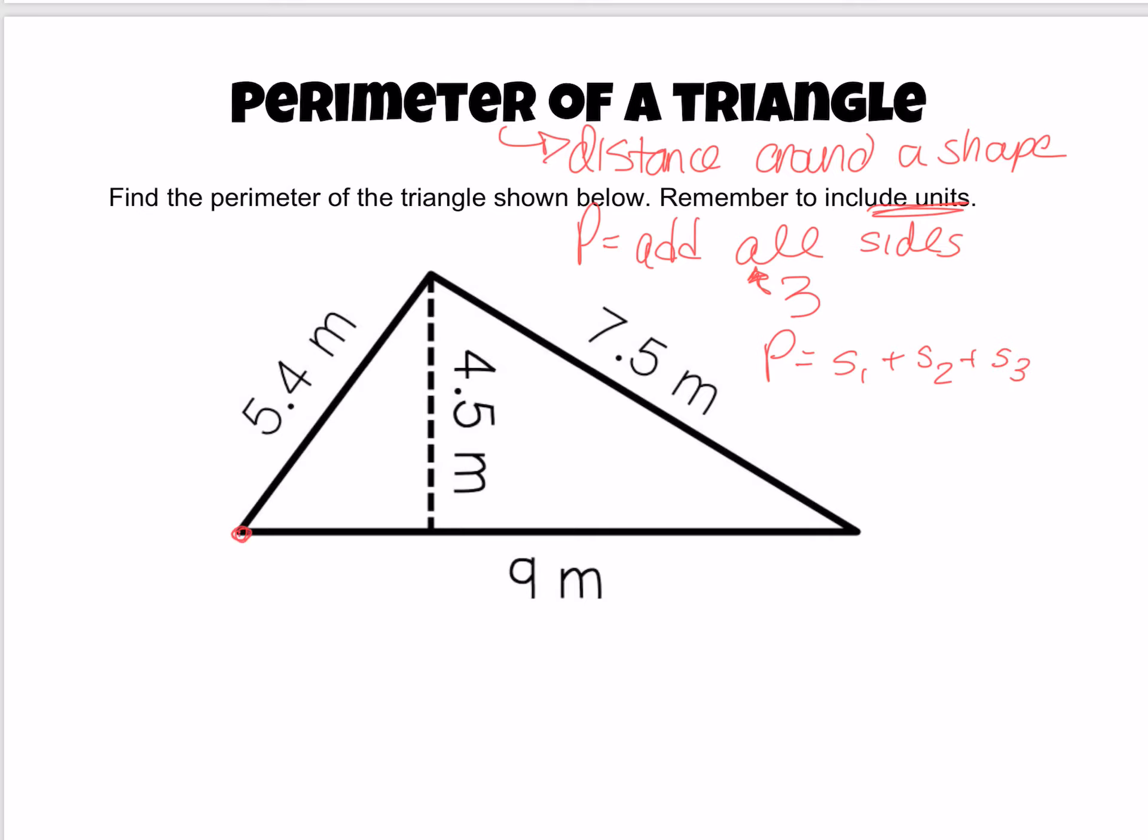You can think about it as standing there and walking around the triangle. You make it to the top, walk on the right side, and then walk the bottom.